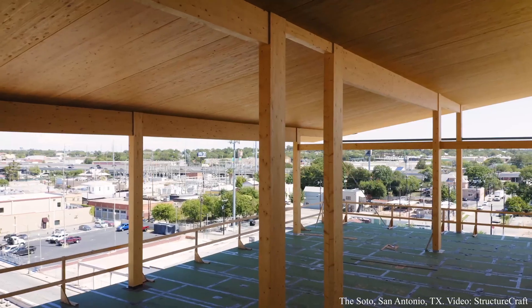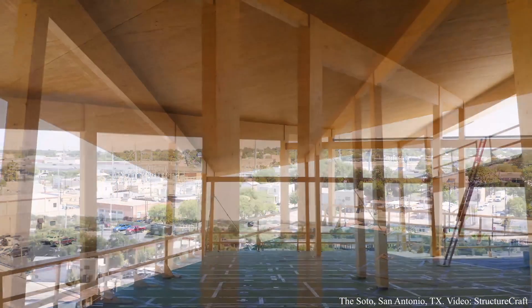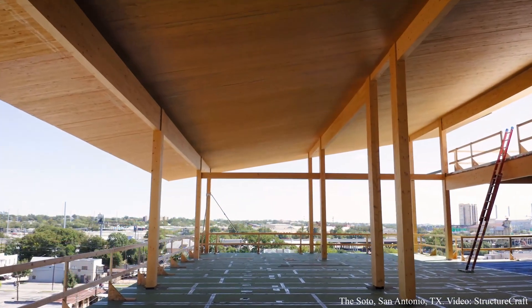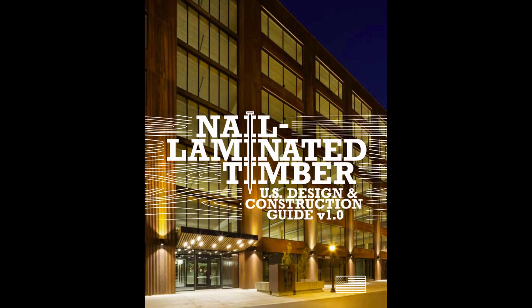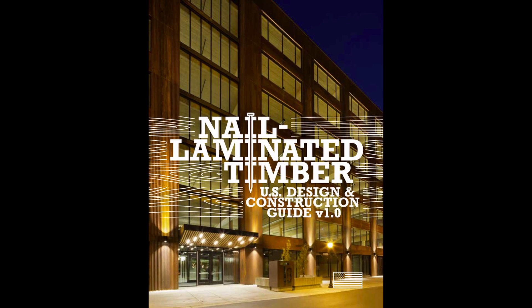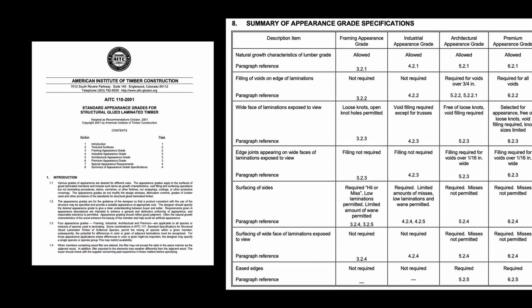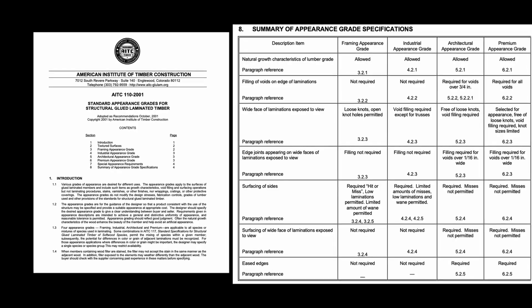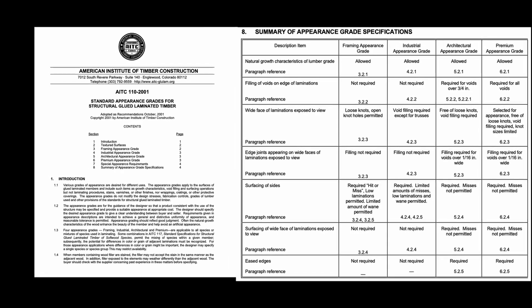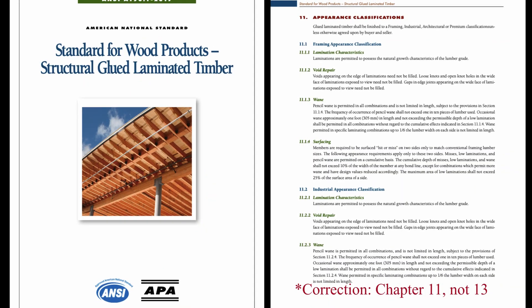You can do the same thing with nail laminated timber (NLT) and dowel laminated timber. The NLT design guide has good information — Appendix A walks through different appearance grade options. For glue laminated timber, similar standards apply whether you're using glulam for columns and beams or as a plank system for GLT.